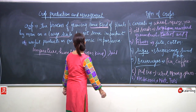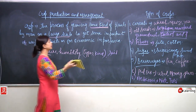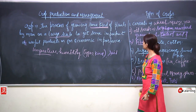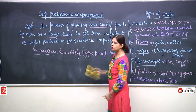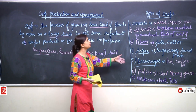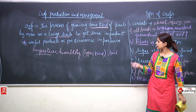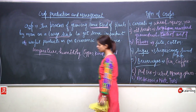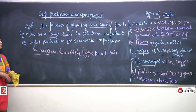We can also take spices. Spices include cloves, ginger, garlic — all these come under spice crops. So these are the different kinds of crops: cereals, oilseeds, fibres, sugar, beverages, pulses, medicines, and spices.